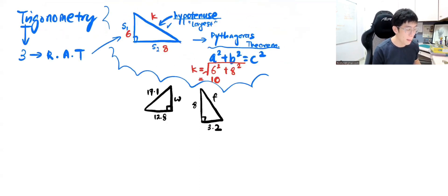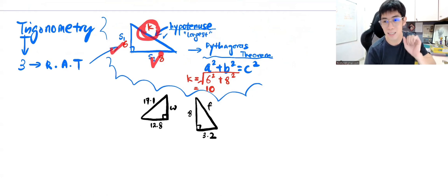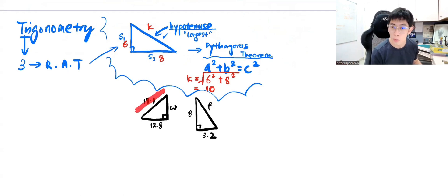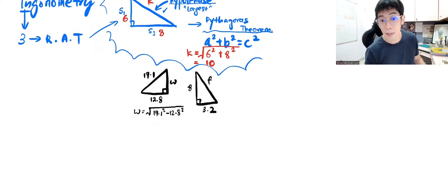Yes, you're going to minus them because based on our Form 1 knowledge to get the longer one, which is hypotenuse, we have to plus. If I give you the longest, what you need to do is that you want to get the shorter one. You will take the long one minus the short one. So this is what you're going to write: W = √(17.1² - 12.8²).